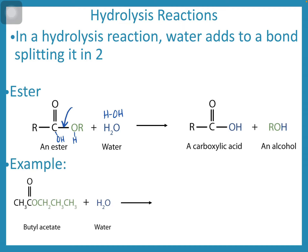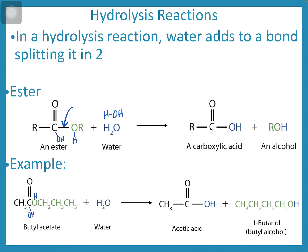As an example, if we have butyl acetate and water, we're going to have the hydroxide coming in over here, a hydrogen attaching to that oxygen, and now we have acetic acid and butan-1-ol using the newer naming. Acetic acid is a common name — with two carbons and a carboxylic acid group, it would be called ethanoic acid through the IUPAC naming system.